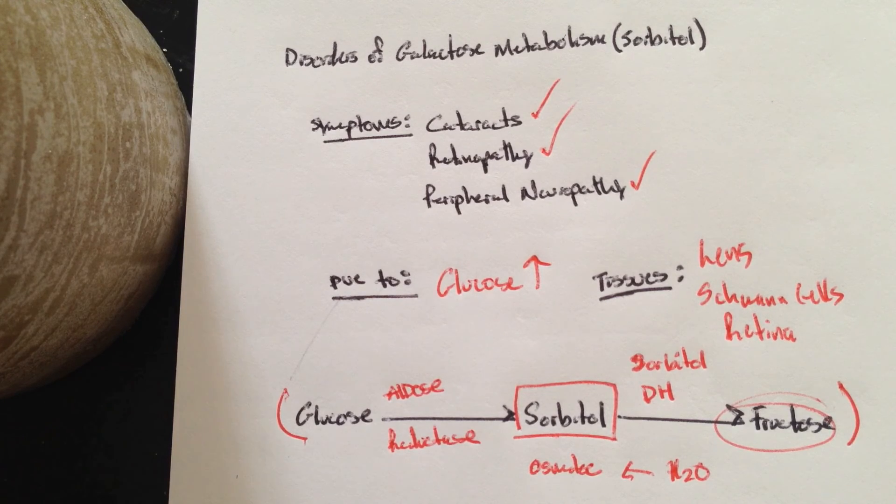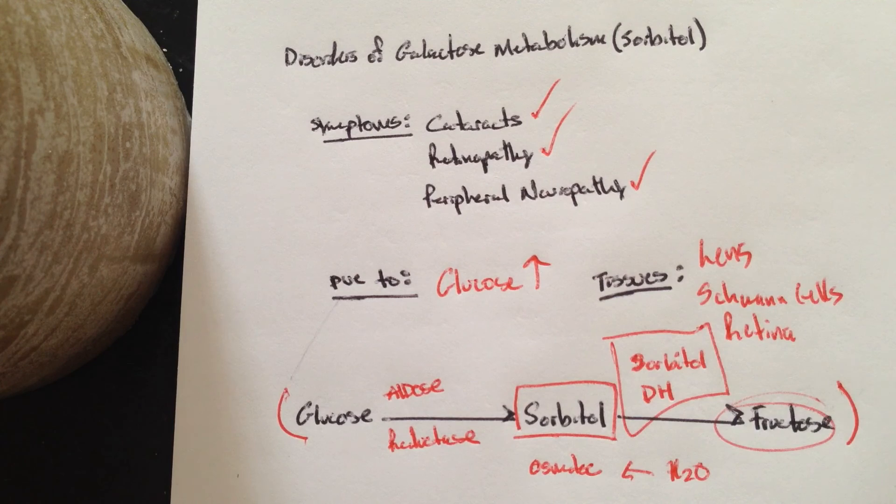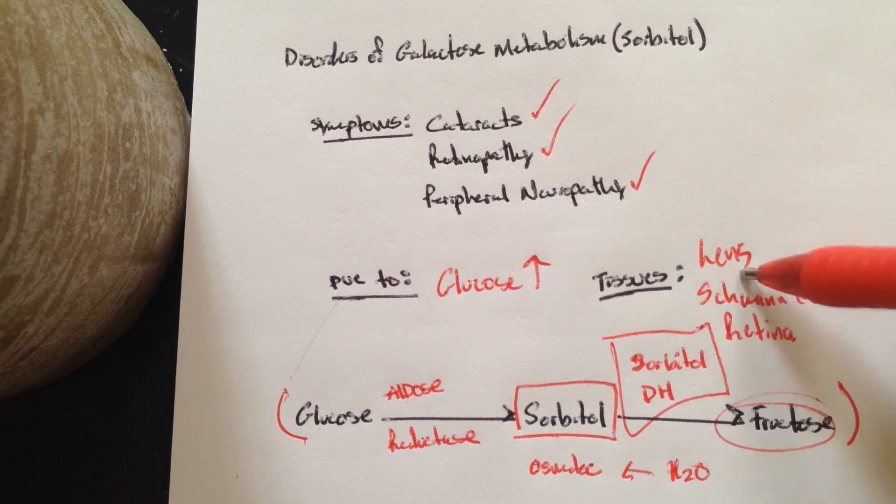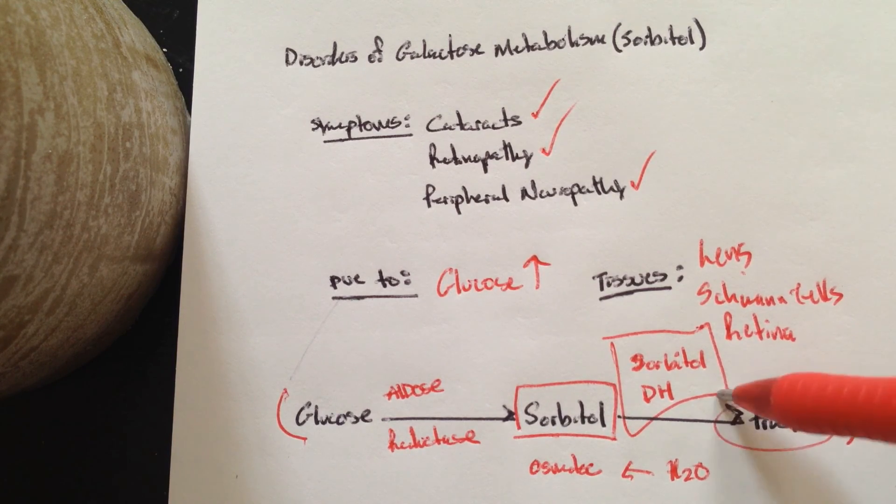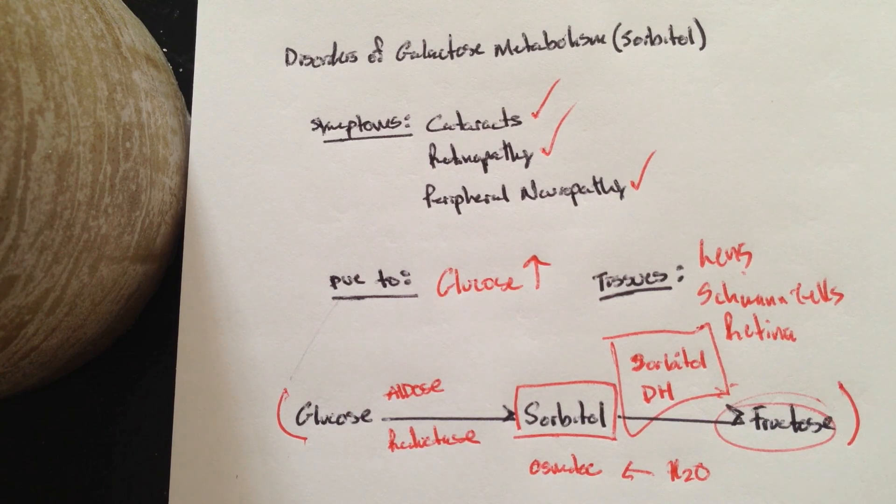the big enzyme to remember is sorbitol dehydrogenase. You have an insufficient amount of sorbitol dehydrogenase in the lens, Schwann cells, and the retina. So you have this increase of this osmotic metabolite sorbitol, which is going to cause H2O to come into the cells and damage them, causing things like cataracts, retinopathy, and peripheral neuropathy in those cells with insufficient sorbitol dehydrogenase.